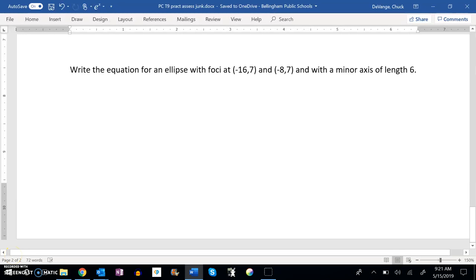This is Pre-Calculus Topic 9. We are working on that practice assessment, and we're on this last problem. Write an equation for an ellipse with foci at (-16,7) and (-8,7) and a minor axis of length 6.